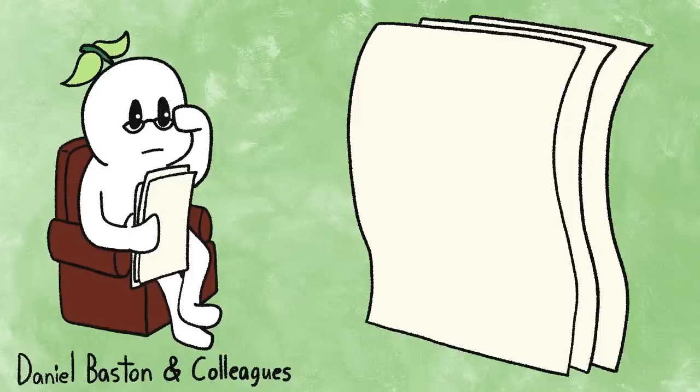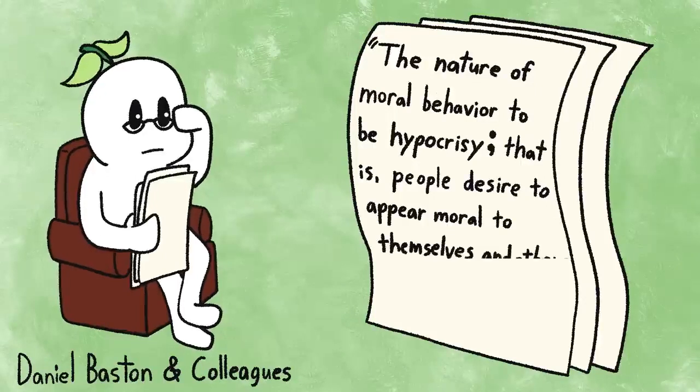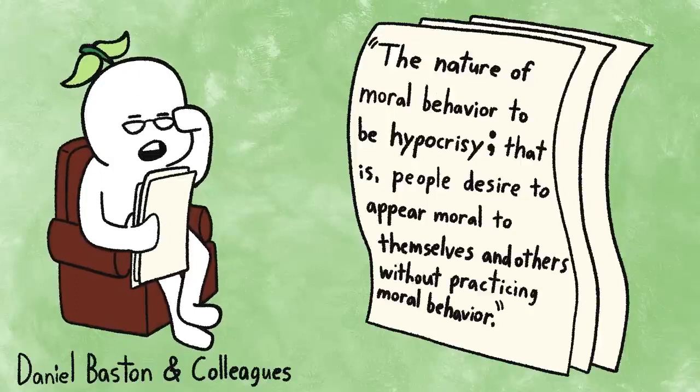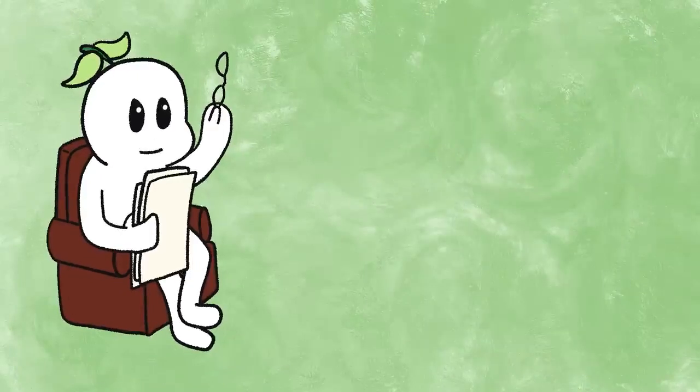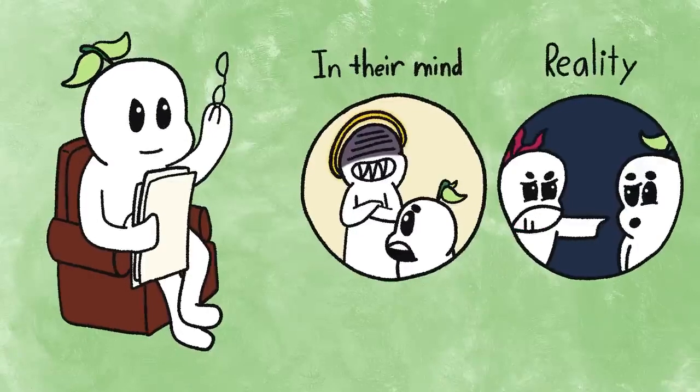Social psychologist Daniel Batson and colleagues did a study spanning five years that concluded the nature of moral behavior to the hypocrisy. That is, people desire to appear moral to themselves and others without practicing moral behavior. Hypocrites are smug and get a rush of self-righteousness when they get on their high horse to criticize and demean others, doing the exact same thing that they're doing. Which brings us to our next point.